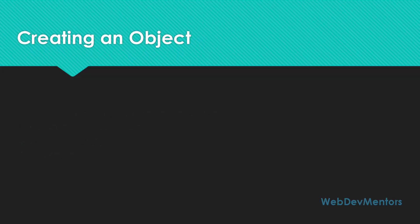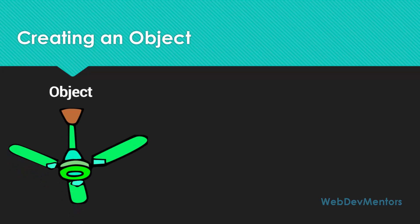So how do you create an object for a class? I have taken up the same fan as an object which I used in the last video for classes. The code for the fan object will look something like this: Fan — the class name — space fanObject — the object name — is equal to new Fan. So I am creating a new fan object and storing it in the fanObject variable of type Fan. This is how you create the object of the fan class.